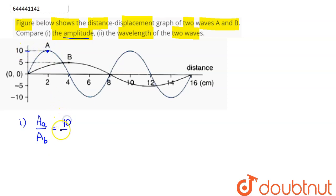is 10, whereas amplitude of B is 5. So the ratio comes as 2:1. That is, amplitude of A is twice the amplitude of B. This is the comparison. Next, coming to the next part - wavelength.